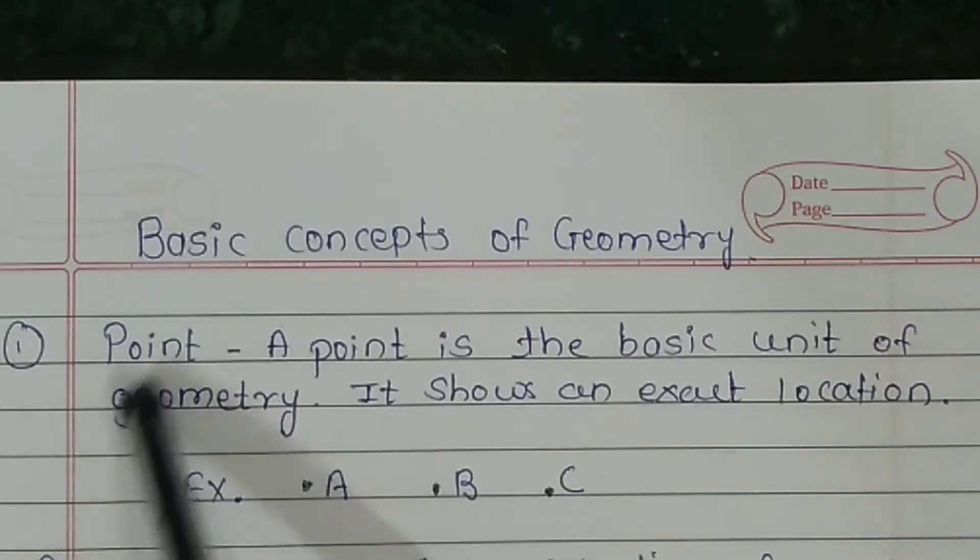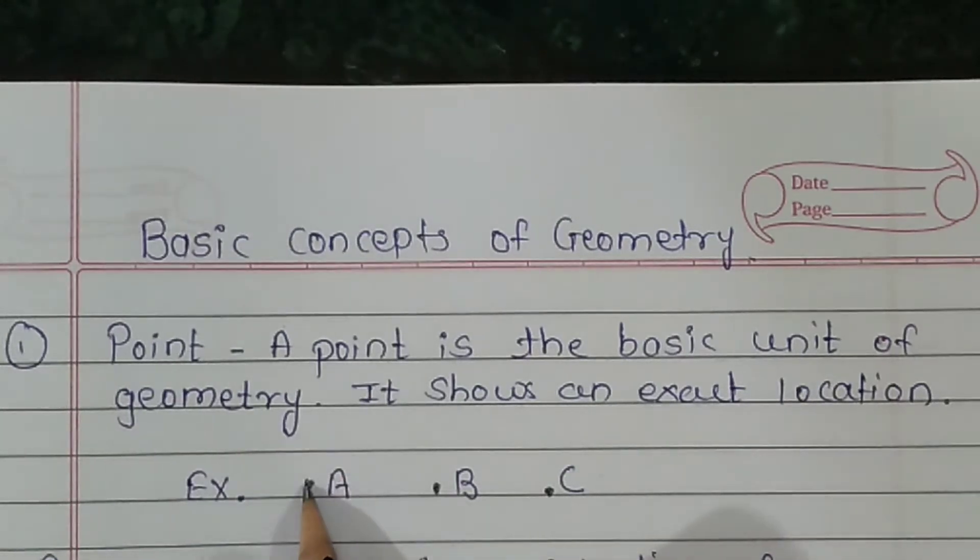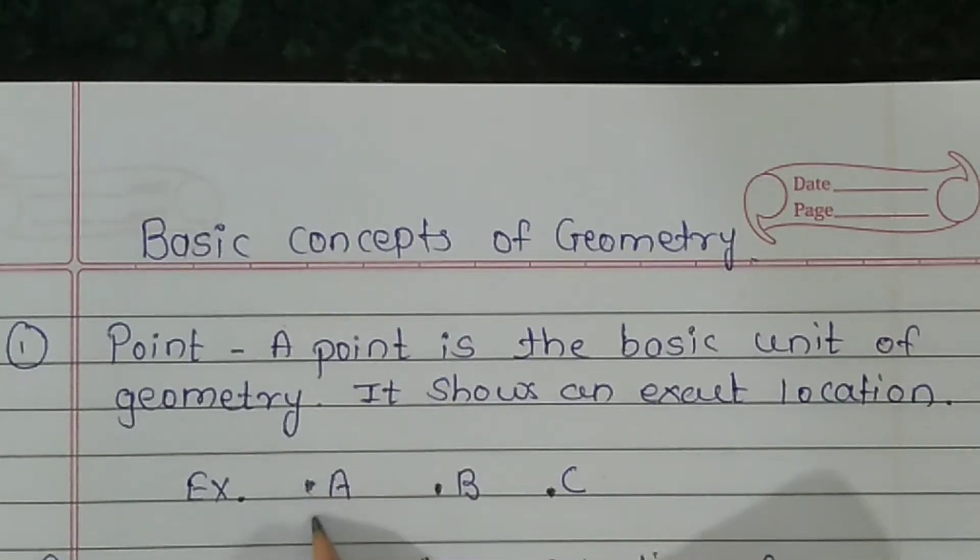First basic concept is point. A point is the basic unit of geometry. It shows an exact location. See, this is called point and it is denoted by capital letter. So we can read it as point A, point B, point C.